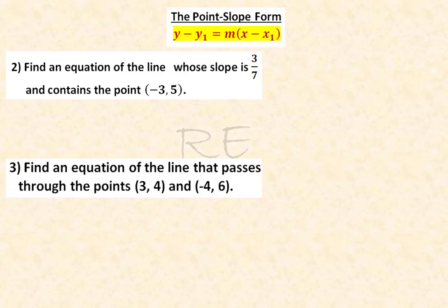Consider this problem. We need to find an equation of the line whose slope is 3/7 and contains the point (-3, 5). The slope is 3 over 7, x₁ is negative 3, and y₁ is 5.